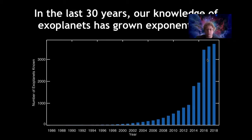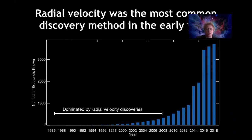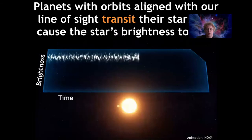Let me go through a few of the innovations that have helped us make this massive improvement in our knowledge of planets outside the solar system. In the early years, from perhaps the mid-1980s to the mid-2000s, most discoveries were dominated by the radial velocity method — looking for the changing Doppler shift of light as a planet orbited. But in the mid-2000s, a new method started to become more common: the transit method.